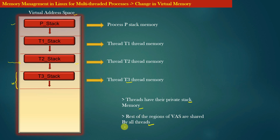We have discussed what changes in the virtual memory of a process take place when a process creates a new thread. Now let us see what change happens in the page table of a process when a new thread is created.